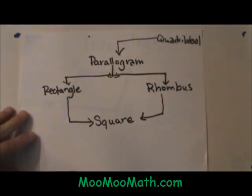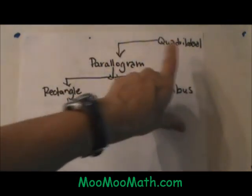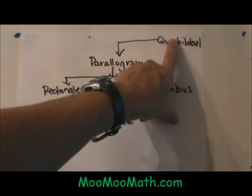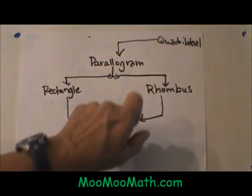Before we look at the properties, let's see where the parallelograms fall in the quadrilateral family. A parallelogram is a four sided polygon which means it is a quadrilateral. So it is under the big umbrella of quadrilaterals.